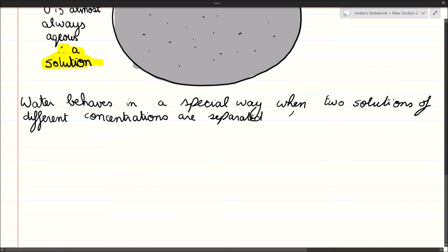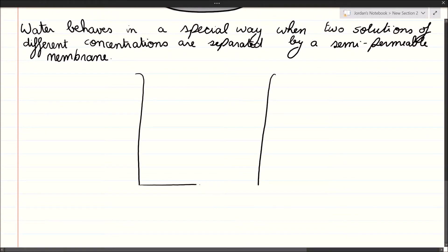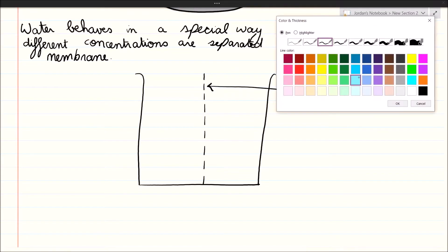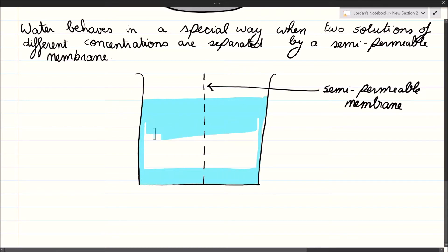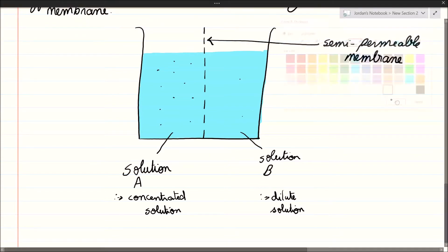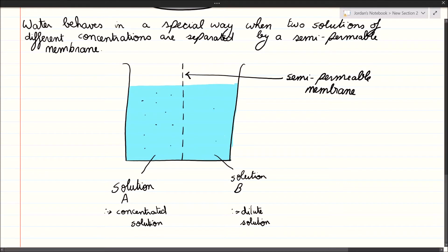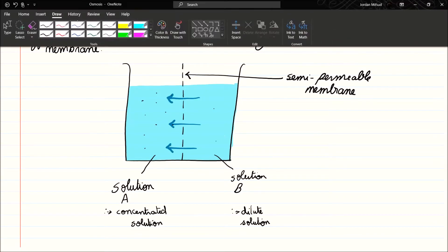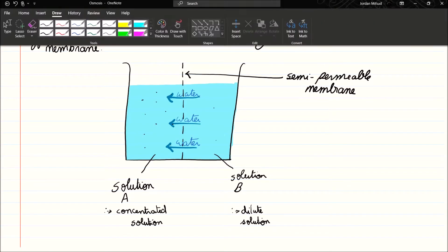Water behaves in a special way when two solutions of different concentrations are separated by a semi-permeable membrane. A semi-permeable membrane allows water through but blocks the passage of solutes — sugars and salts cannot cross by diffusion through it. The membrane would have to be fully permeable for solutes to cross. Let's say solutions A and B are separated by a semi-permeable membrane, and solution A is more concentrated than solution B.